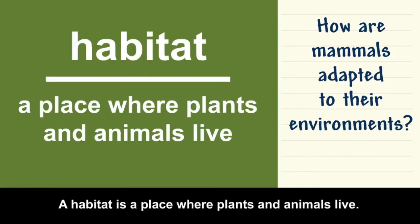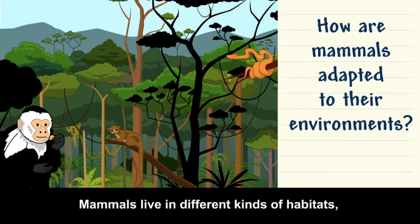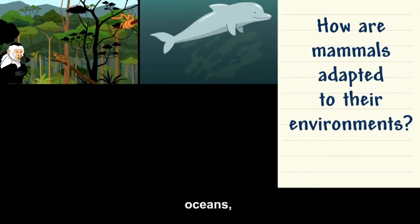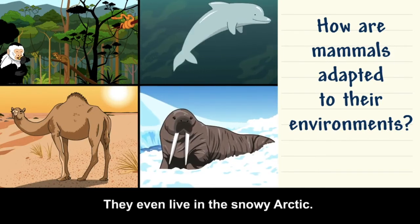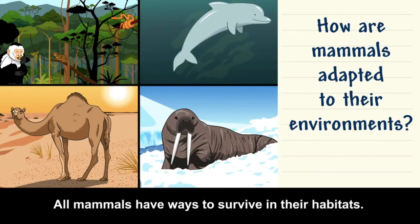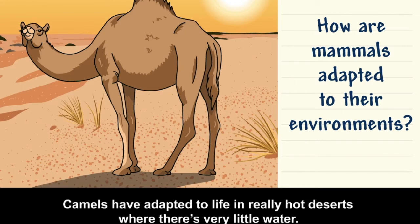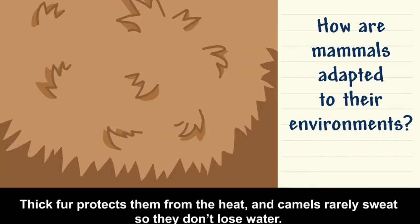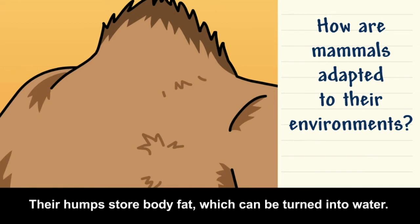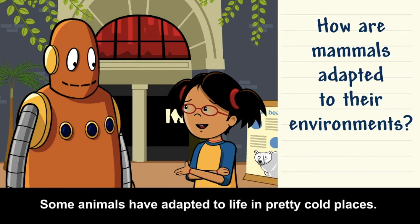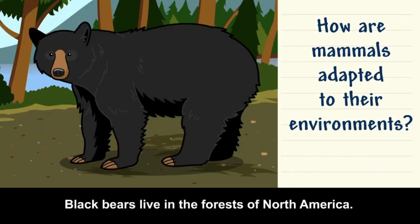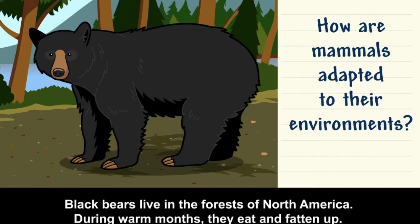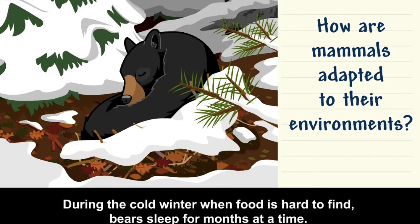A habitat is a place where plants and animals live. Mammals live in different kinds of habitats, like rainforests, oceans, and deserts — they even live in the snowy Arctic. All mammals have ways to survive in their habitats. Camels have adapted to life in really hot deserts where there's very little water. Their long legs keep their bodies away from the hot ground. Thick fur protects them from the heat, and camels rarely sweat, so they don't lose water. Their humps store body fat, which can be turned into water. Black bears live in the forests of North America — during warm months they eat and fatten up, and during cold winter when food is hard to find, they sleep for months at a time.